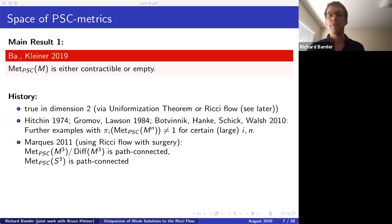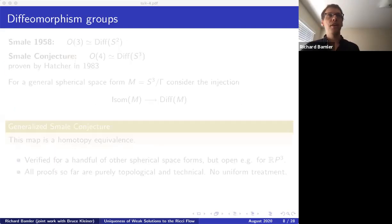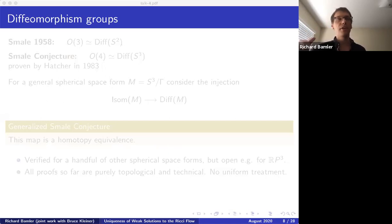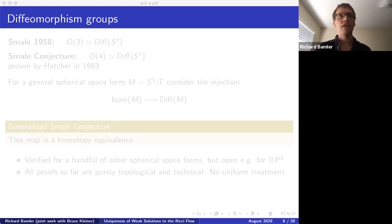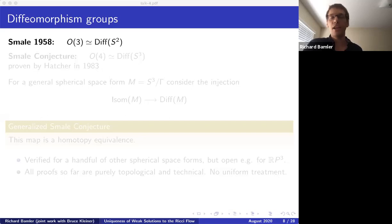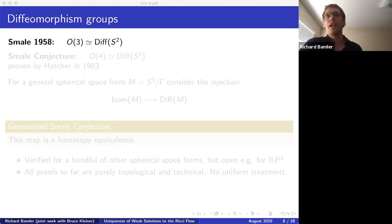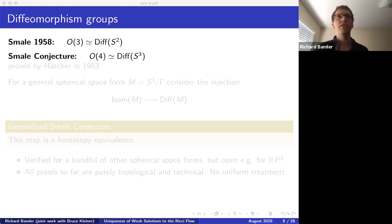Now let me talk about diffeomorphism groups. The first time diffeomorphism groups were studied was in a paper by Smale from 1958, in which he showed that the space of diffeomorphisms on S² is homotopy equivalent to O(3) — the orthogonal 3×3 matrices. So there's a consistent way of deforming any diffeomorphism of S² into an orthogonal transformation. Smale then conjectured the same should be true in one higher dimension, and this Smale conjecture was proven by Hatcher in 1983.